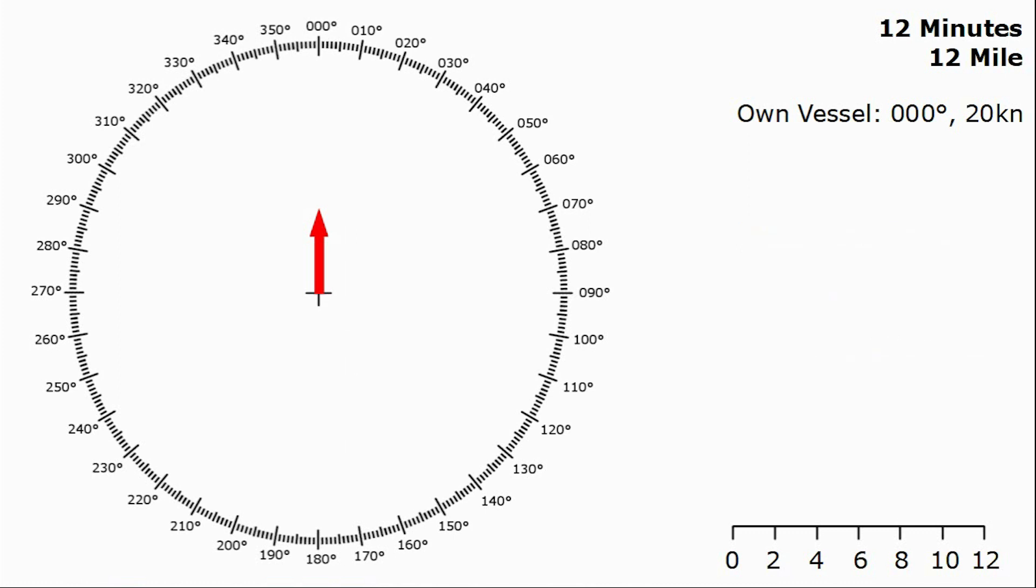We're then ready to start receiving returns. When we get the first return all we've got is a range and bearing, we can't tell anything else at this stage. Six minutes later we get the second return, we still can't tell much from this. And six minutes after that second plot, or 12 minutes after the initial plot, we've then got three plots in a line. This gives us good information and we can continue to complete the plot.